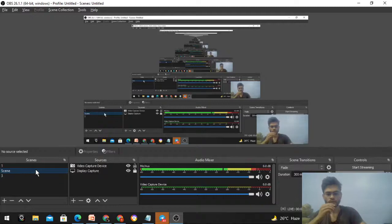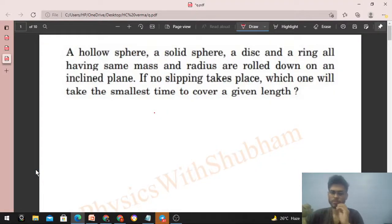Okay, hi everyone. Today let's discuss this interesting problem. A hollow sphere, a solid sphere, a disk, and a ring, all having the same mass and radius, are rolled down on an inclined plane. If no slipping takes place, which one will take the smallest time to cover a given length?